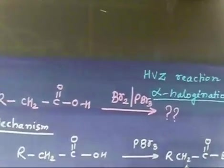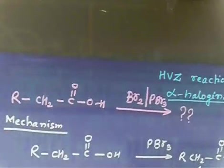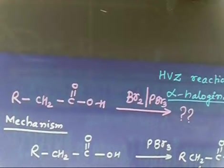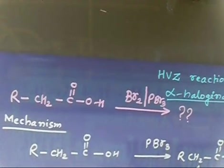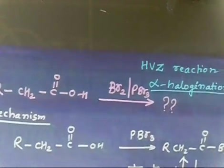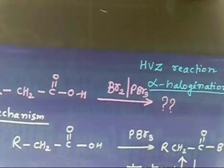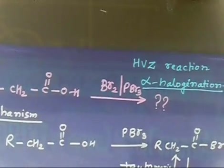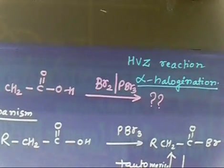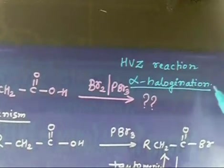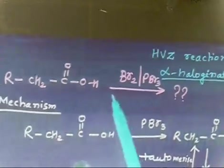Let us discuss the HVZ reaction — this is called the HBZ reaction. If you have an acid RCH₂COOH and treat it with bromine and PBr₃, this reaction is called the HVZ reaction and is used for alpha halogenation. If you remember the term alpha halogenation, you can directly write down the product.